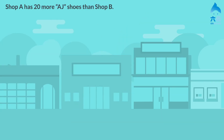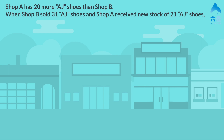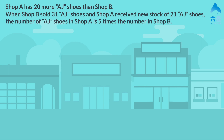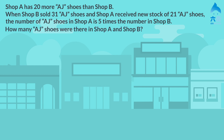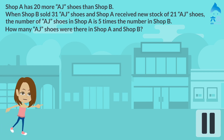Shop A has 20 more AJ shoes than Shop B. When Shop B sold 31 AJ shoes and Shop A received new stock of 21 AJ shoes, the number of AJ shoes in Shop A is 5 times the number in Shop B. How many AJ shoes were there in Shop A and Shop B? Pause the video to solve the problem.